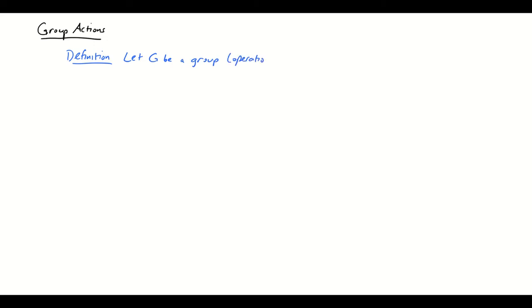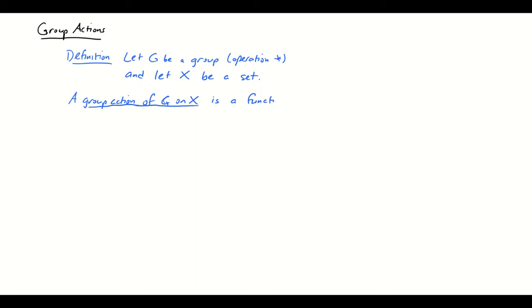So first the definition. Let G be a group with operation star, and let X be a set — not necessarily a group; it doesn't even have to have any operation on it. It may just be a plain set of objects. A group action of G on X is a function f from G cross X to X, having a couple of properties.